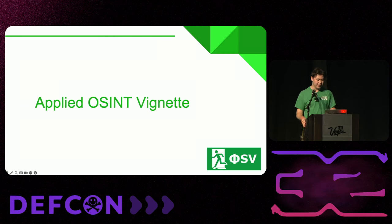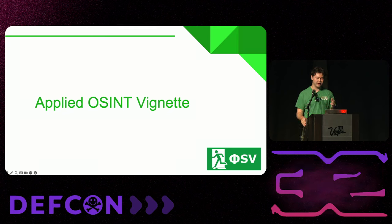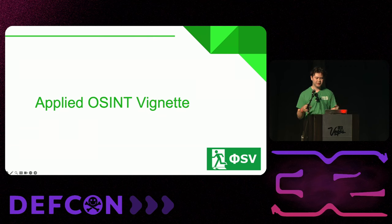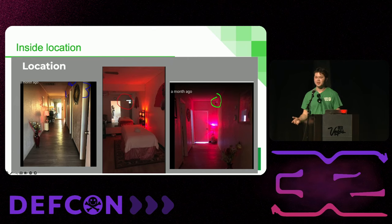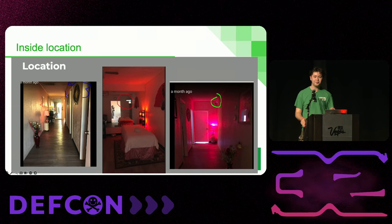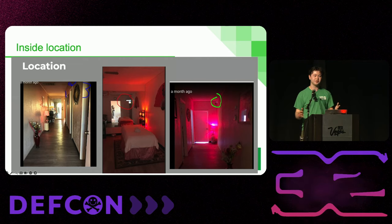I'm going to walk through an applied OSINT vignette — a small investigation I did. It involved a massage parlor, for information gathering for a local department. Looking at Google review images: on the leftmost image you see a hallway with three doors. In the second image there's a monitor, and every single room has one — showing every camera location so whoever's inside can see what's going on outside. On the right image you can actually see one of those cameras above the door.